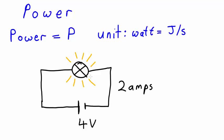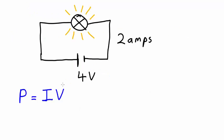But it so happens there is a more general formula for power that we can use in any situation in a circuit. P equals I times V, where P is the power, I is the current, and V is the voltage.